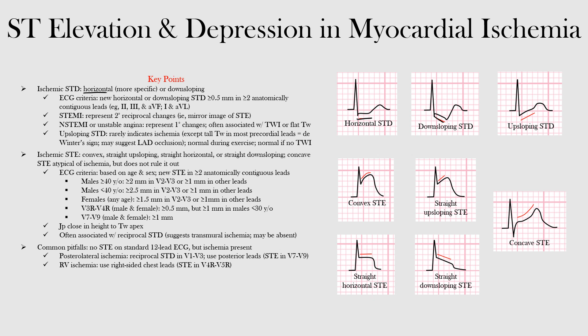Recent guidelines define ischemic ST depression as new horizontal or downsloping ST depression greater than or equal to 0.5 millimeters in at least two anatomically contiguous leads. For example, leads II, III, and aVF are all inferior leads, so you would need at least two of these three. Leads I and aVL are high lateral leads that may also qualify.